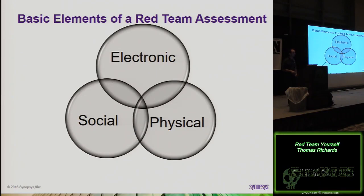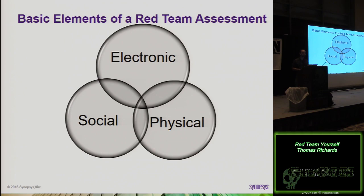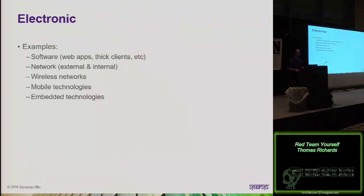The basic elements for a red team assessment are the electronic, the social, and the physical. That's where they all sit, and right in the middle is red teaming — we're doing everything, looking at where everything overlaps to see how the system responds. The electronic footprint covers computers, computer software, web apps, thick clients, your network (external and internal), wireless networks, mobile technologies, and embedded technologies.